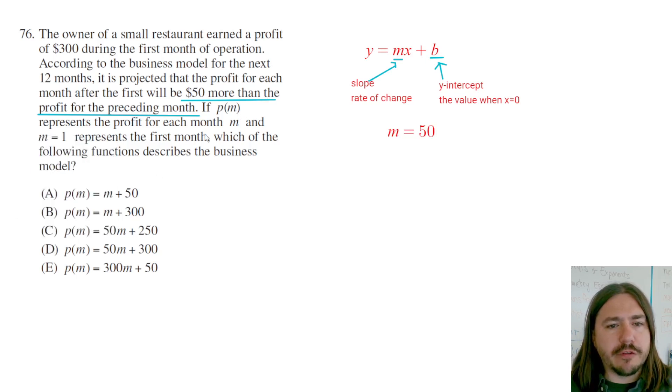If P of M represents the profit for each month, and M equals 1 represents the first month, they made $300 during the first month of operation. Now we have to be careful here, because if the y-intercept is the value when M equals zero, this should be the profit on the zeroth month.